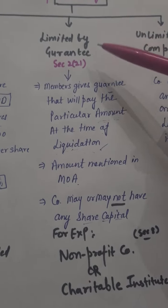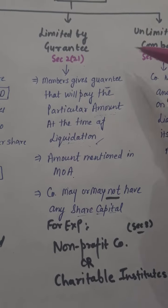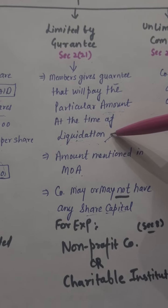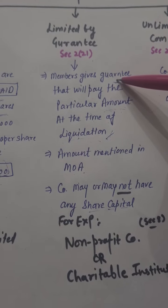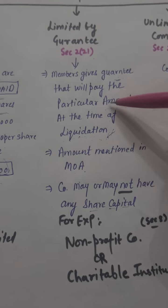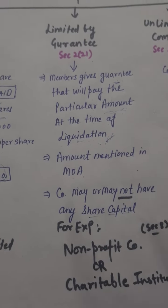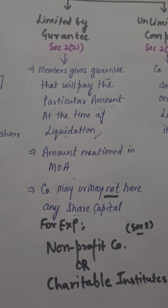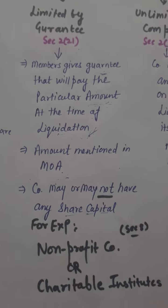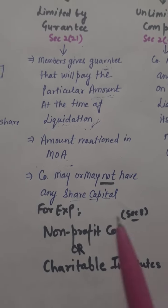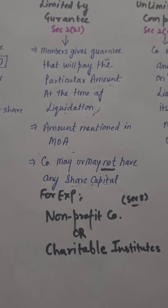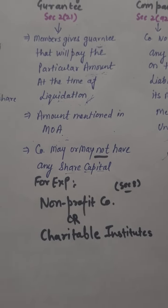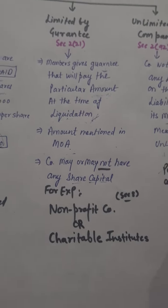Now let's look at limited by guarantee, defined under Section 2(21). Members give a guarantee that they will pay a particular amount at the time of liquidation. The guaranteed amount is defined in the Memorandum of Association. The company may or may not have share capital. For example, non-profitable companies, Section 8 companies, and charitable institutes are limited by guarantee.